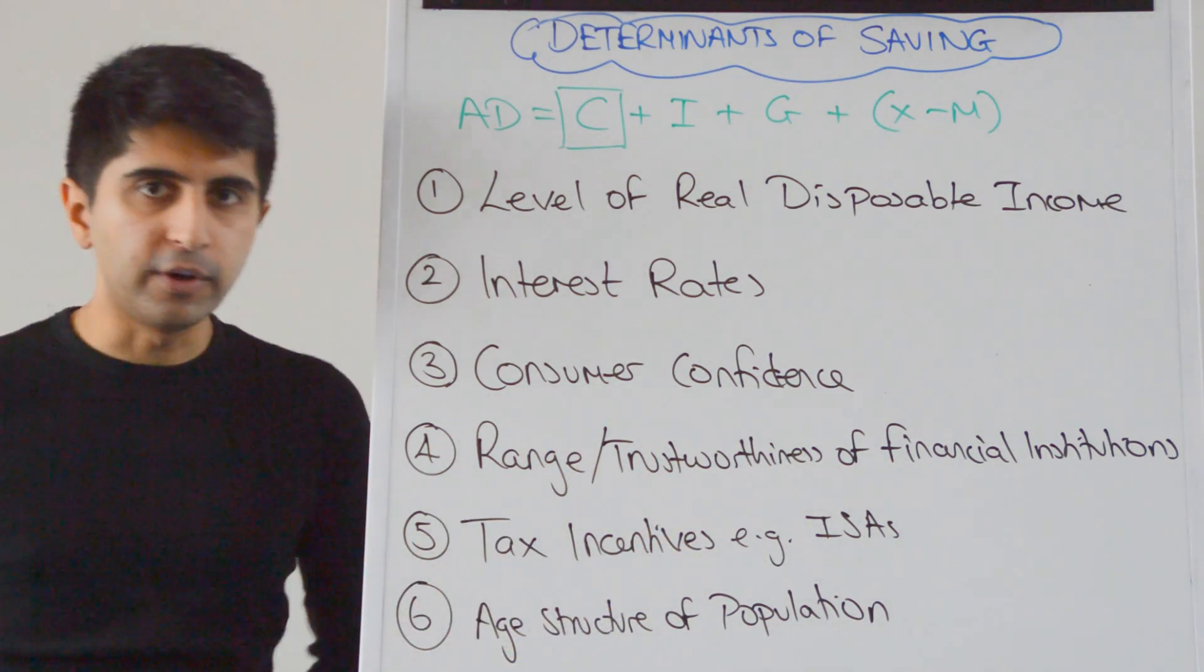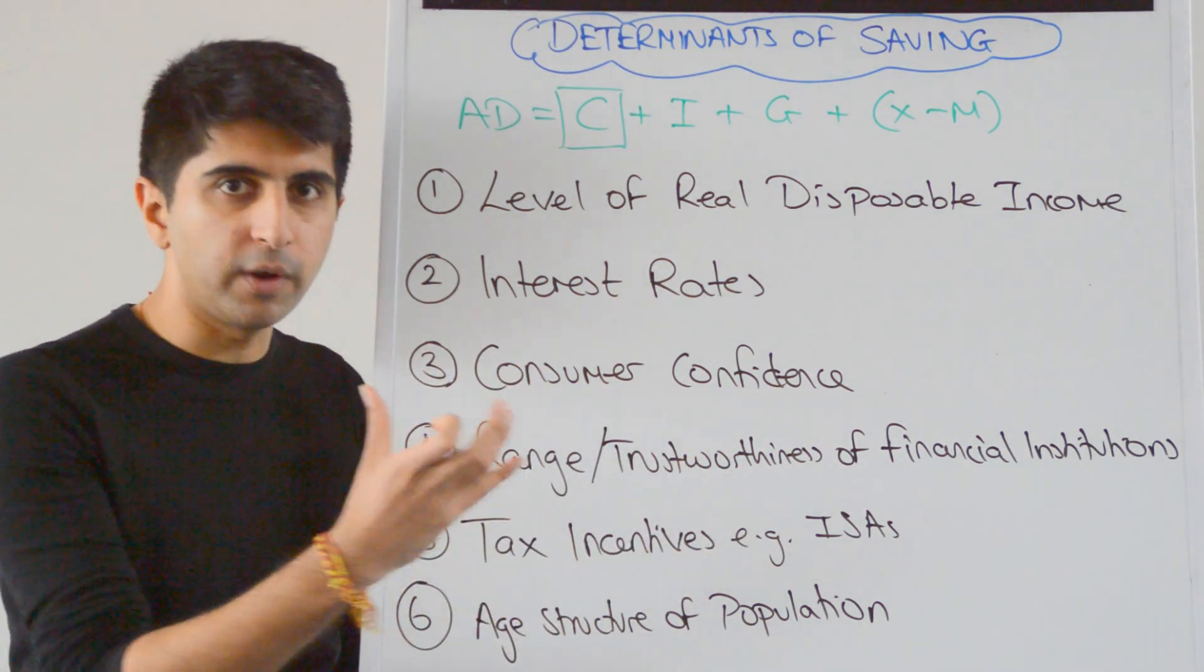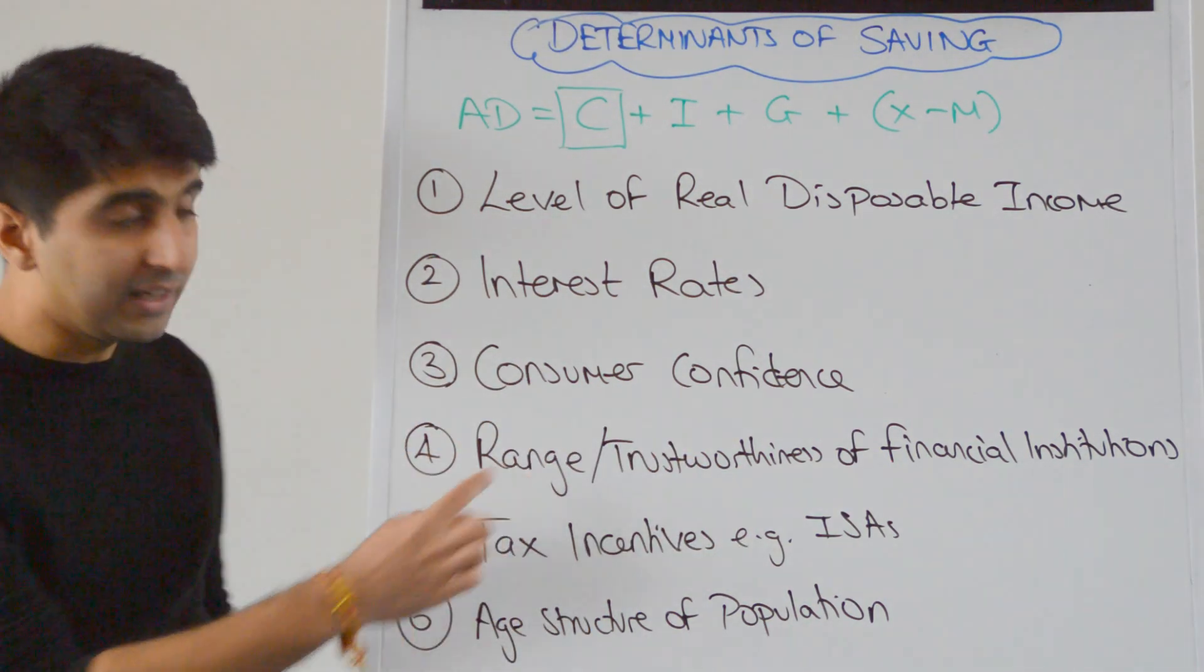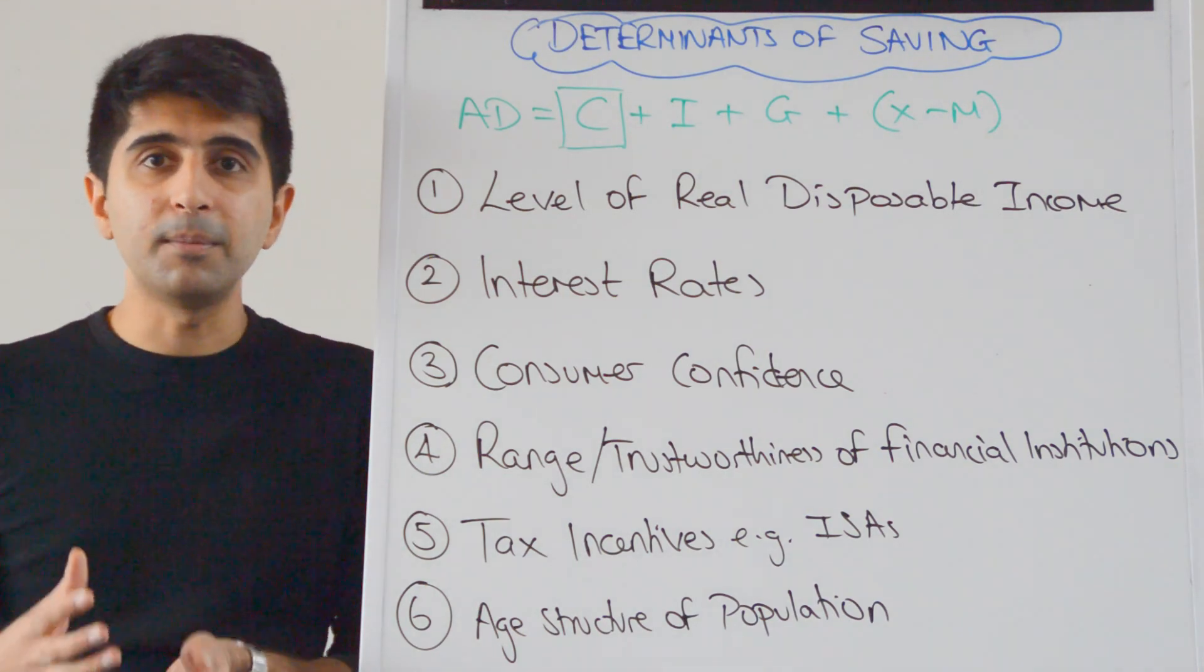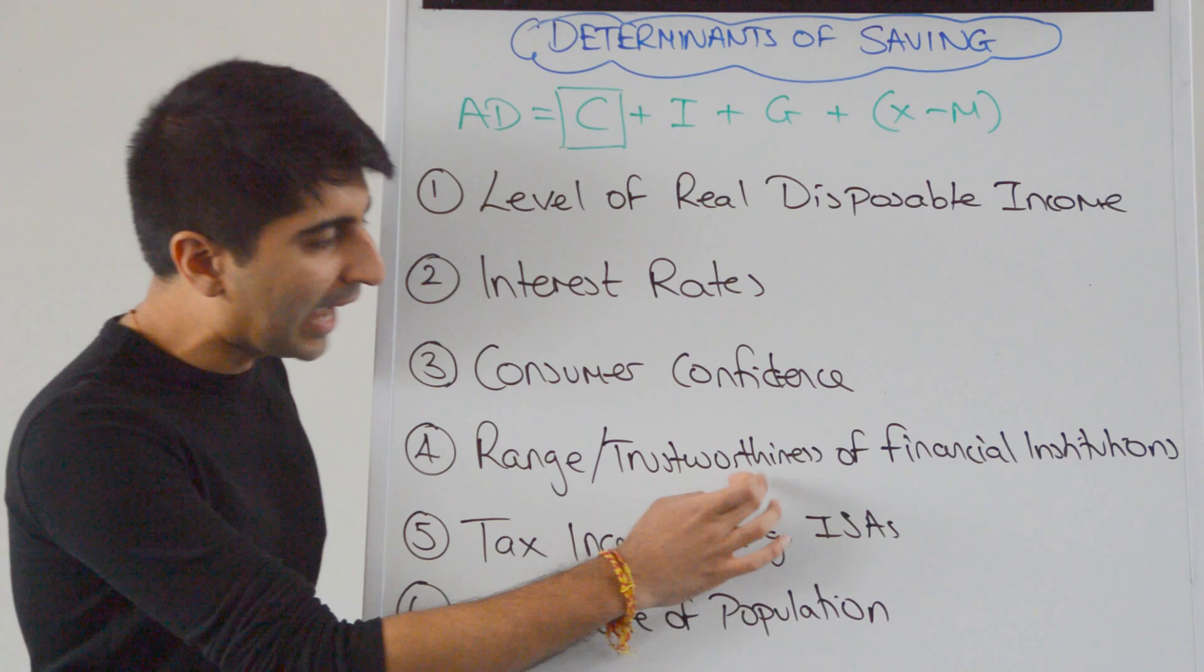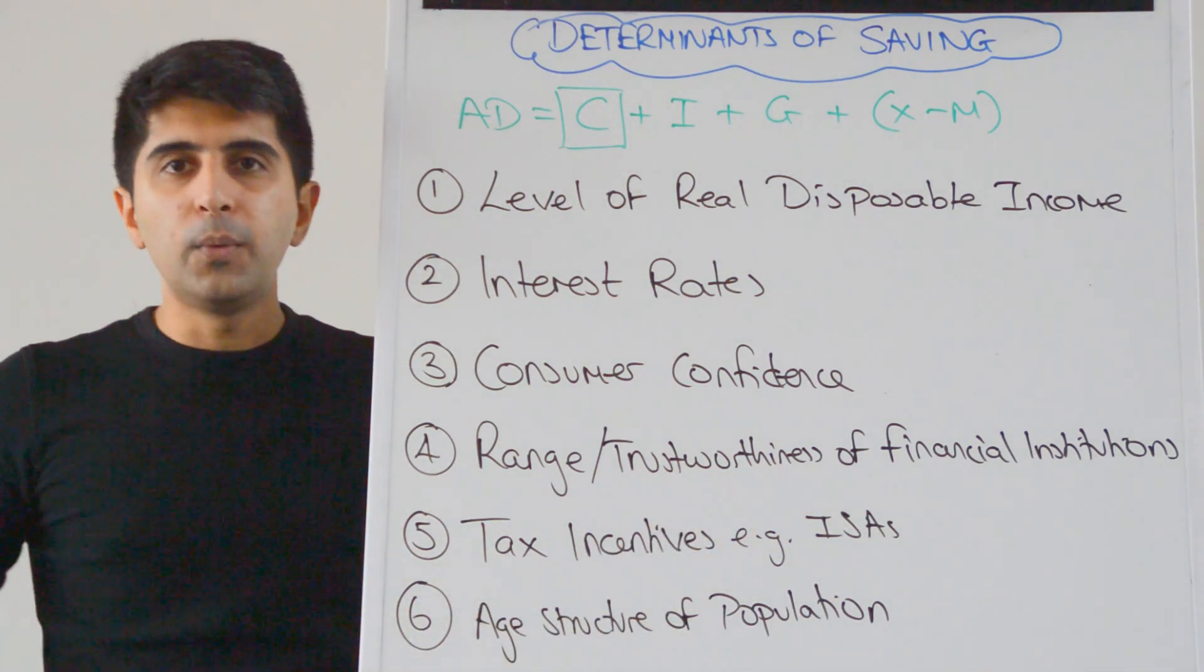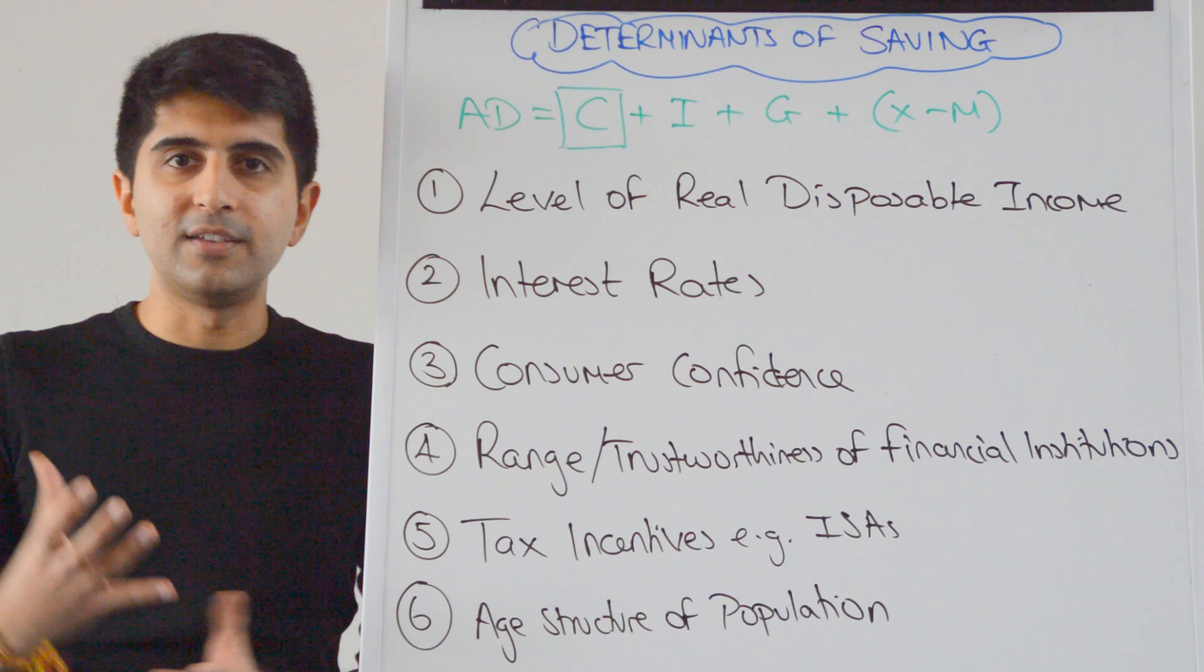This point here, number four, is very important for developing countries. The range and the trustworthiness of financial institutions. In developing countries, financial institutions like banks simply don't exist in the kind of volume that they do in developed countries and often they are corrupt or non-trustworthy. They might be unofficial. Which again reduces, of course, the incentive to save in them.